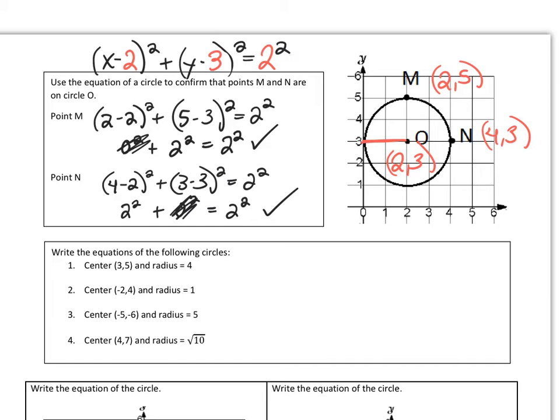I bet you could write the equations for the following circles. Let's give it a try. Start out by writing the equation of a circle. Then erase your h and your k and substitute these values of x and y, your center values for your ordered pair into the formula.